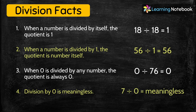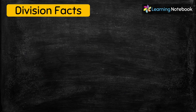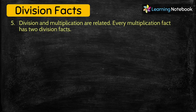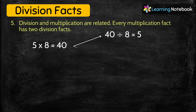The fourth division fact is: division by zero is meaningless. For example, if we divide 7 by zero, it will be meaningless. The fifth division fact is: division and multiplication are related — every multiplication fact has two division facts. Consider the multiplication fact 5 × 8 = 40. Its two division facts are: 40 ÷ 8 = 5, and 40 ÷ 5 = 8.